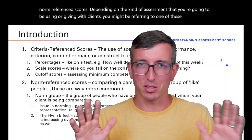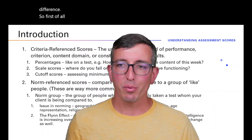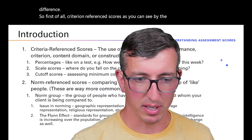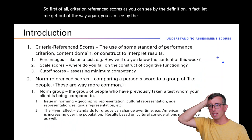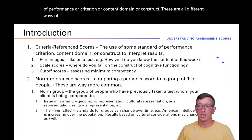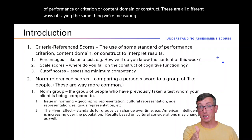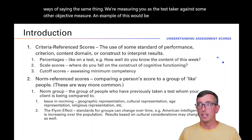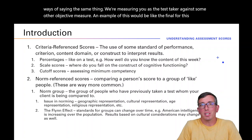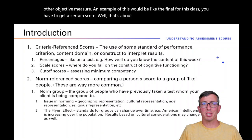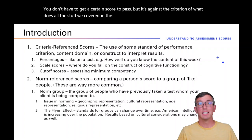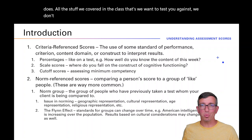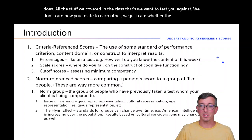I'm going to give you some examples to help you suss out the difference. Criterion-referenced scores use some standard of performance, a criterion, a content domain, or a construct — these are all different ways of saying the same thing. We're measuring you as the test taker against some other objective measure. An example would be a class final — we don't care how you relate to each other; we care whether you know the material from that content domain.